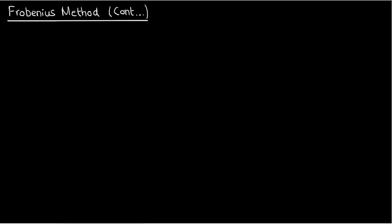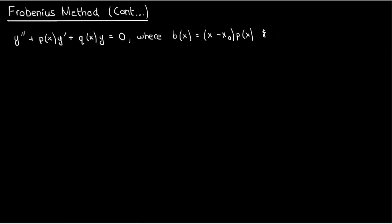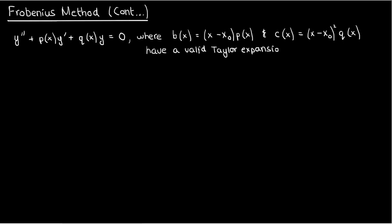Recall from last time that when solving a differential equation y'' + p(x)y' + q(x)y = 0, where b(x) = (x - x₀)p(x) and c(x) = (x - x₀)²q(x), both of which have valid Taylor expansions about x = x₀, we can use Frobenius's method, where we let y be the sum from n = 0 to infinity of aₙ times (x - x₀)^(n+r).